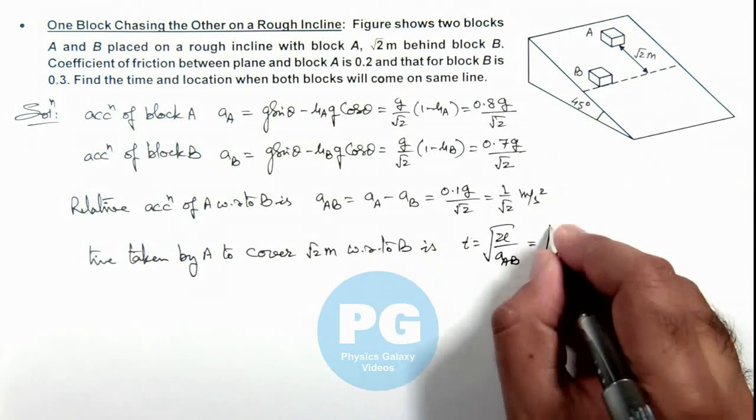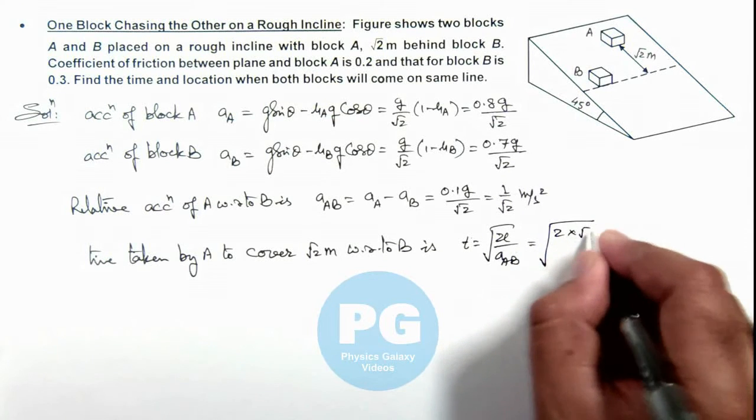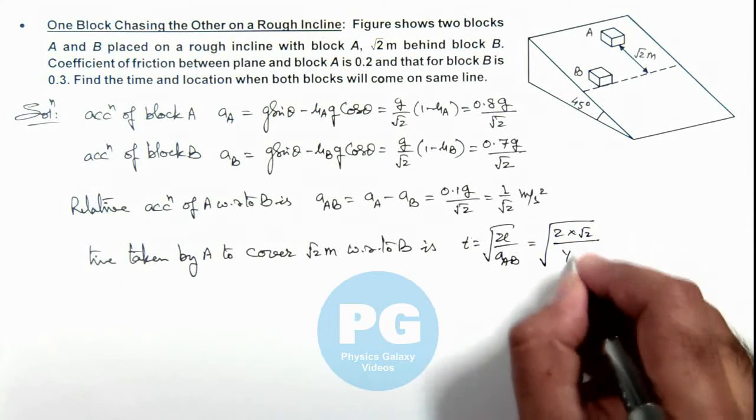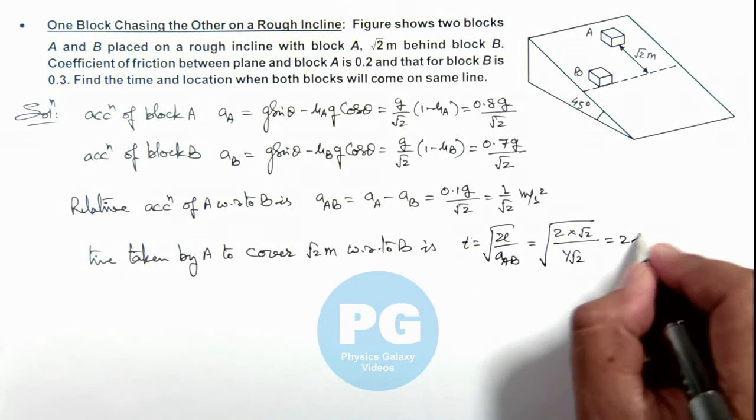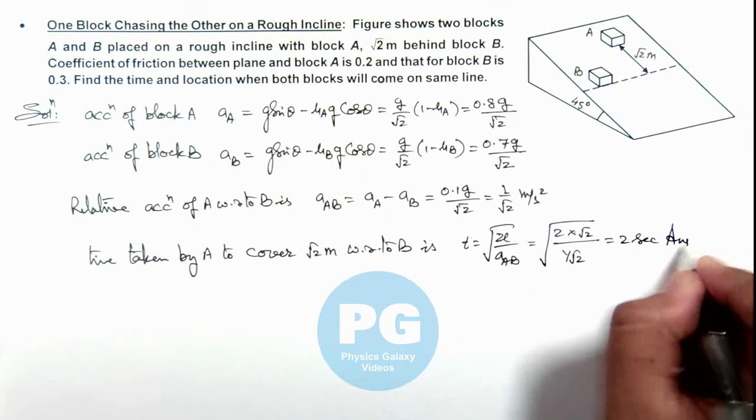So this will be √(2×√2 / 1/√2), so that will be equal to 2 seconds that will be one answer of the problem.